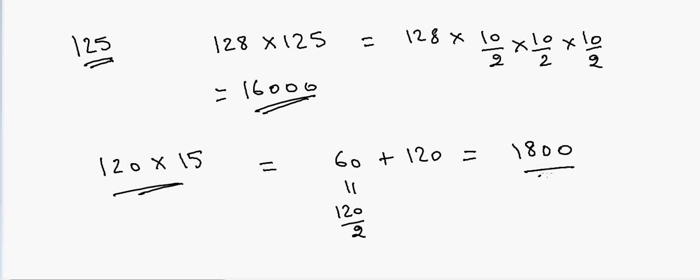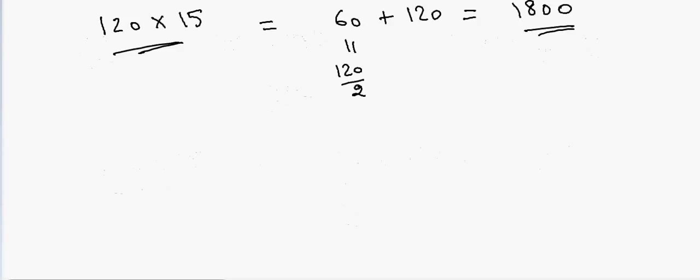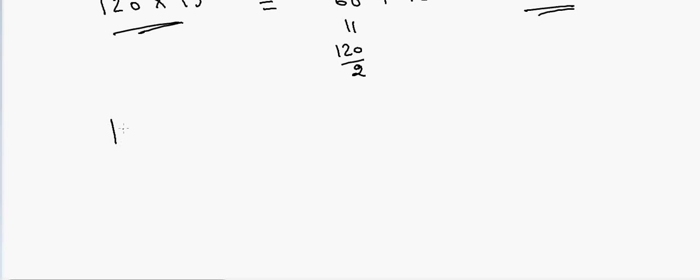Again, if I have 180 to multiply by 15, that will be equal to half of 180 is 90 plus 180, so 18 and 9, that's equal to 27, right? Two zeros in the end, so that's our answer.